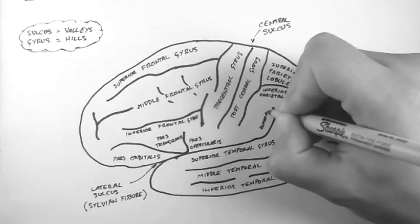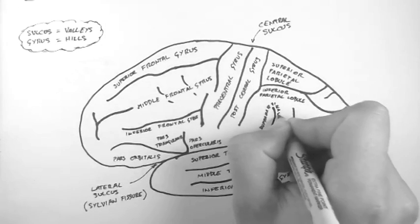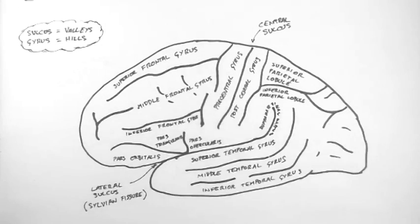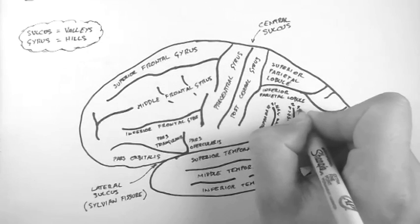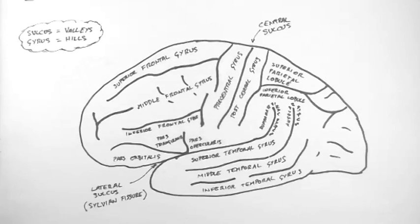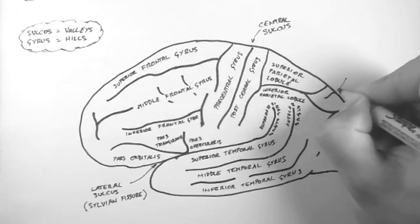Now over here is the supramarginal gyrus. And then around here is the angular gyrus. Now let's name some sulci.